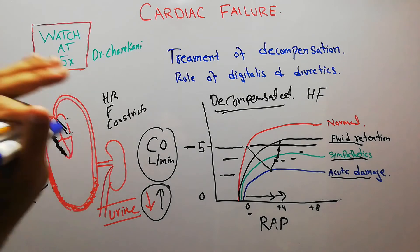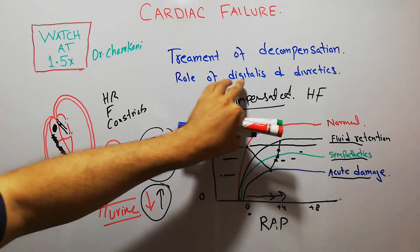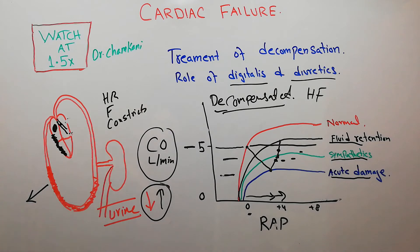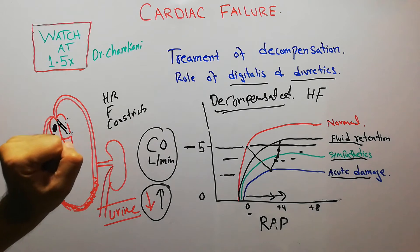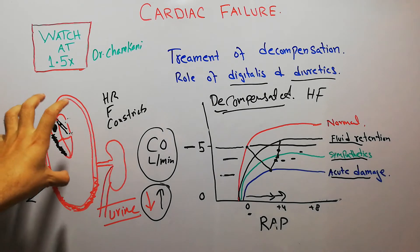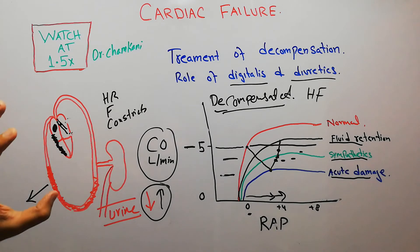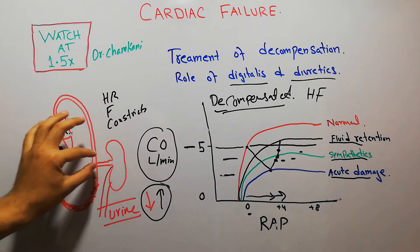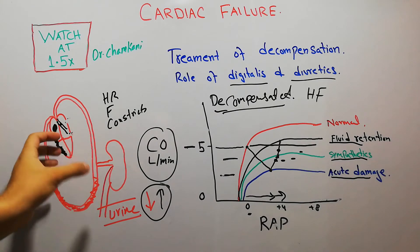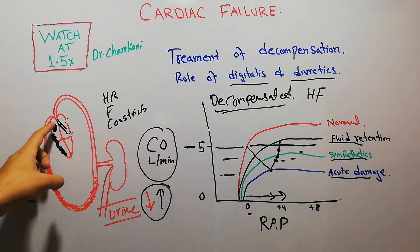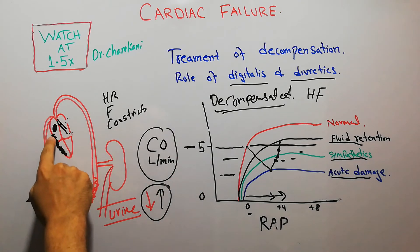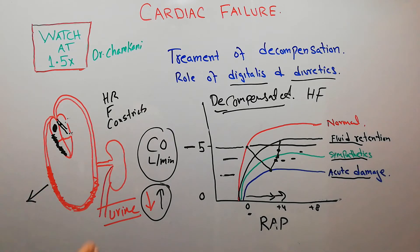The main topic of our discussion is the treatment of decompensation and the role of digitalis and diuretics. If the damage is very large, the heart is weak and there is a lot of fluid retention that is not helping increase cardiac output. Excessive fluid retention is dangerous because it stretches the weak heart more and accumulates fluid in the lungs, making recovery impossible.